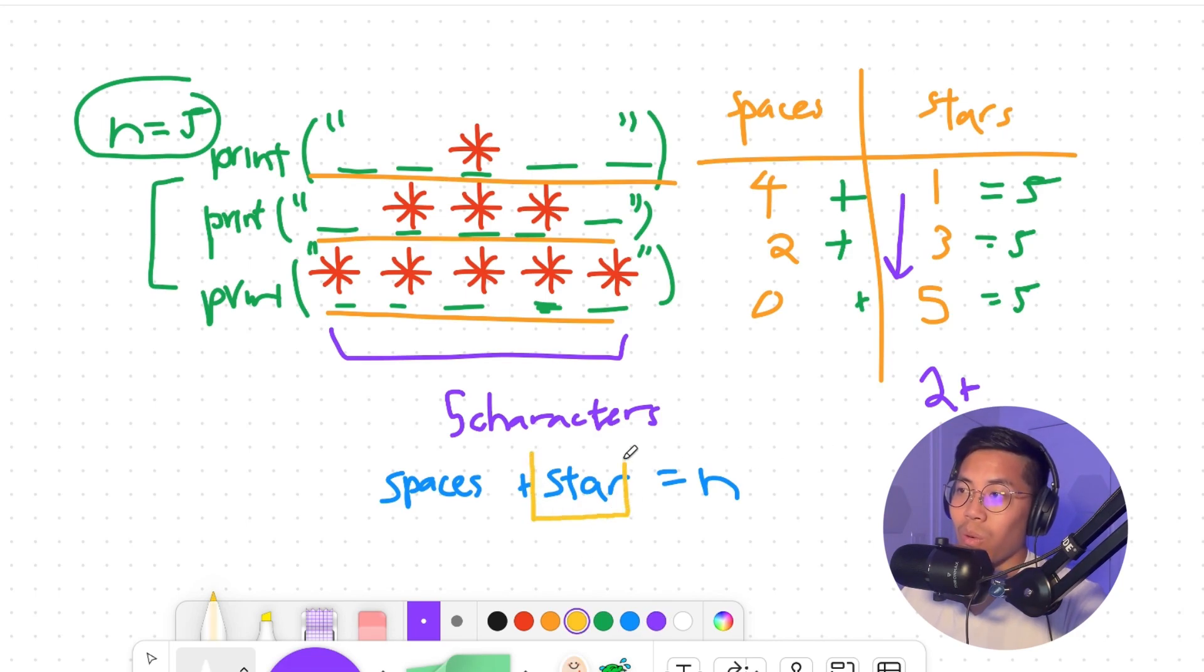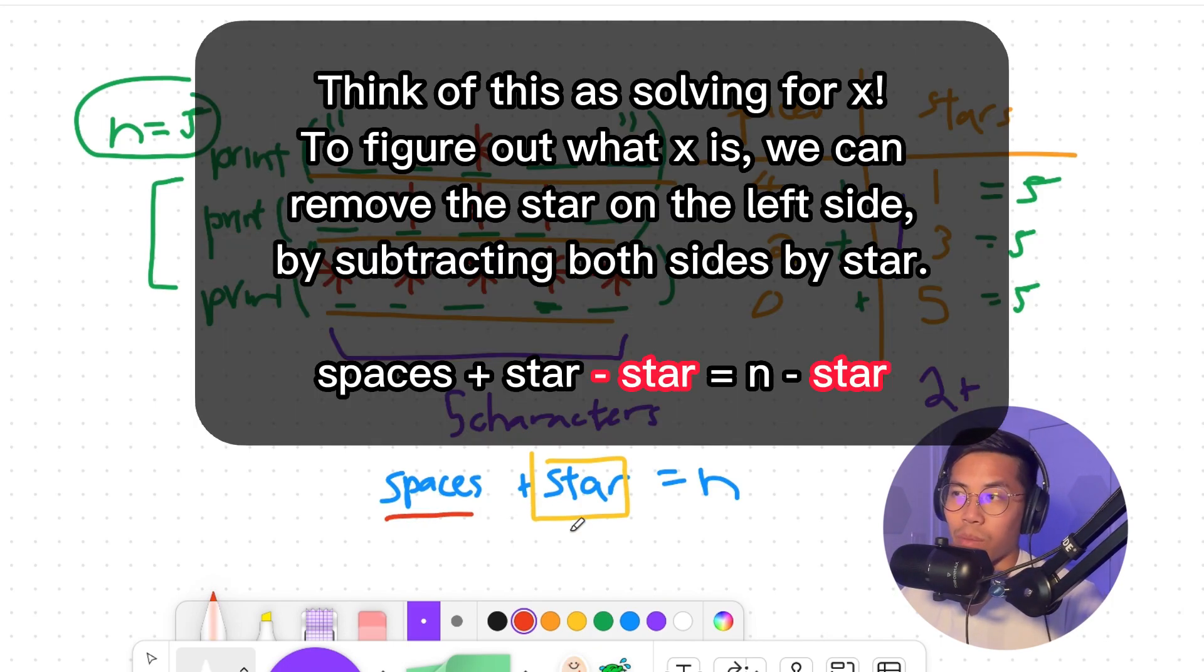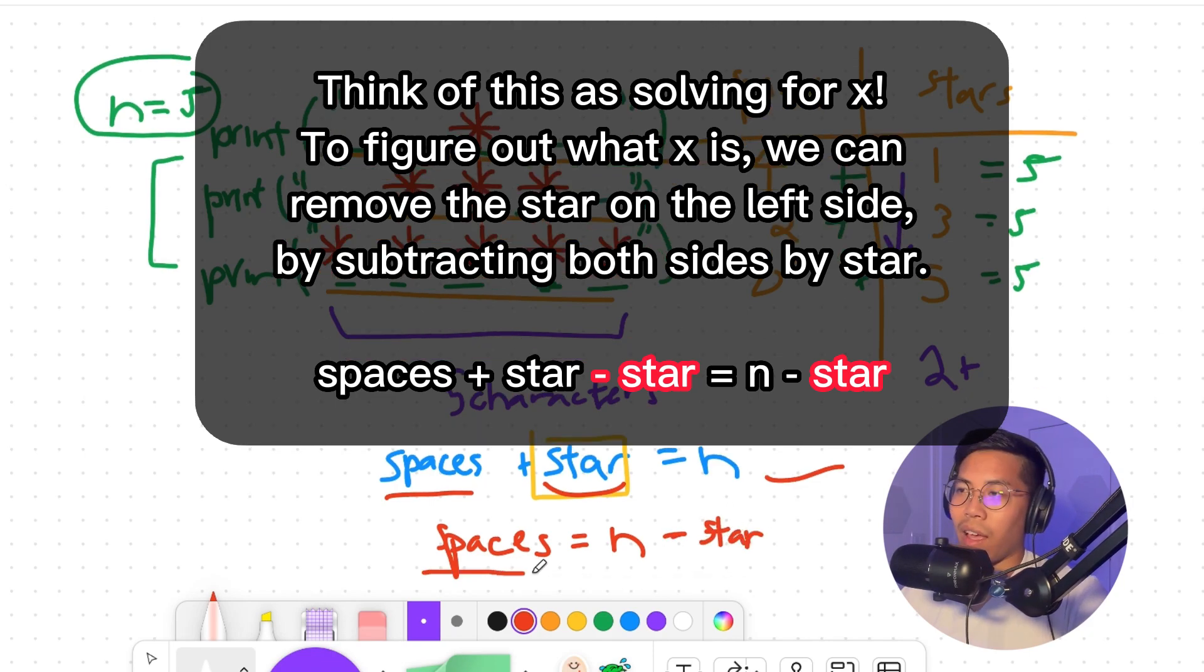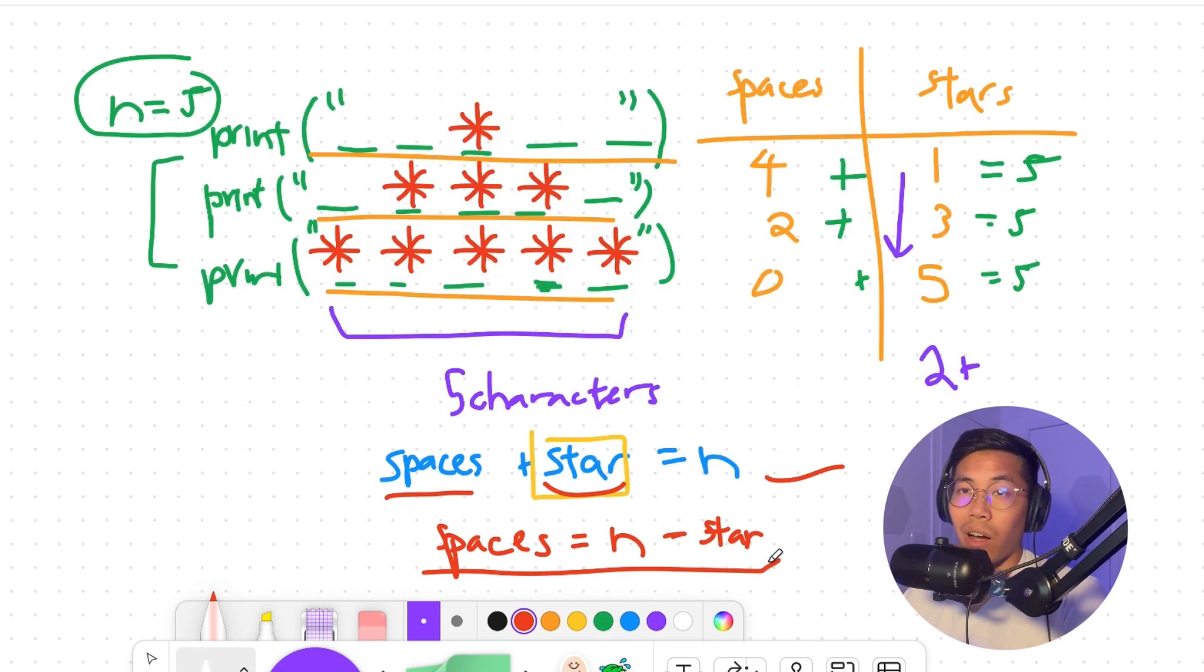So basically, we know what the stars are based on what row we're on. Now to calculate the spaces, we can just do basic algebra, where we can basically move the stars to the other side. So this will be spaces equals n. And then we move the star over, so we have to do subtract star. And this is the equation we'll use to calculate how many spaces we need on each level.